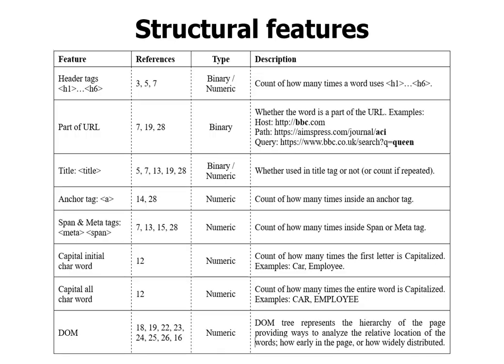Moving on to structural features. We analyze the structure of the web page. The DOM tree is a tree structure based on div, table, and other tags to find the organization of the page. Even simpler approaches just use the tags themselves: H1 to H6 header tags — if a given word is in a header tag, it's likely more important. If a word is part of a link — like 'BBC' in bbc.com — that gives indication it might be a good keyword.